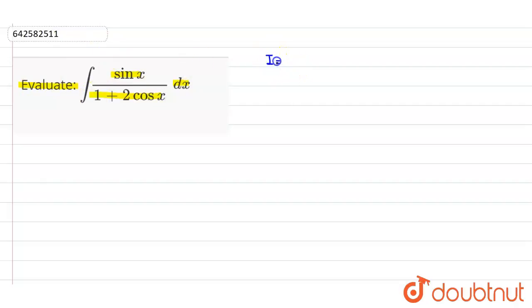So we are given i equals integration of sin x dx, and in the denominator what will come is 1 plus 2 cos x. So we can solve this question by one method.